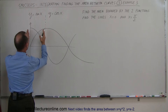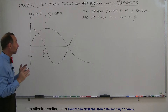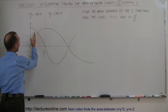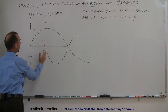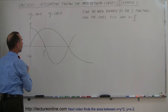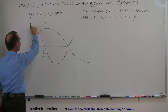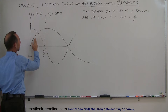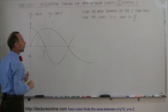We're finding the area between these two functions, but right away you notice something strange. Between 0 and pi over 4, you find that this function is higher than this function, but on the other side it's this function that becomes higher than this one.